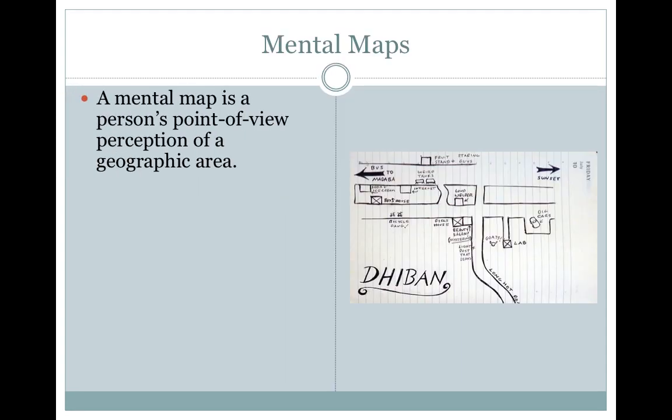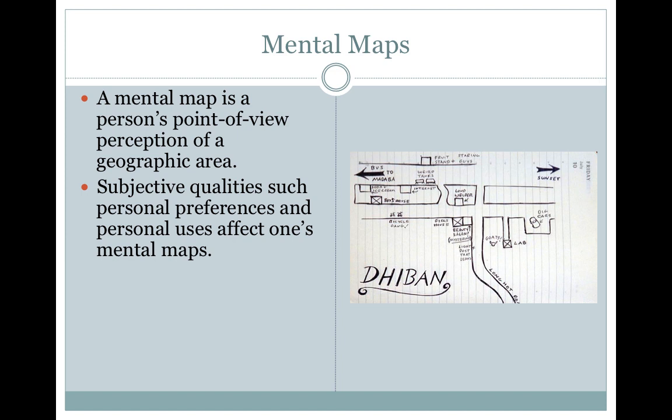A mental map is a person's point of view, perception, of a geographic area. Subjective qualities, such as personal preferences and personal uses, affect one's mental maps.